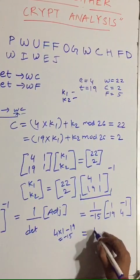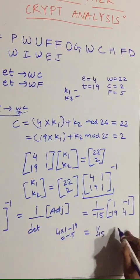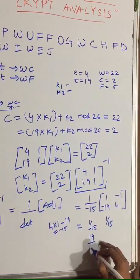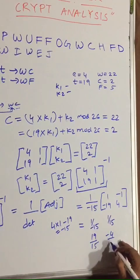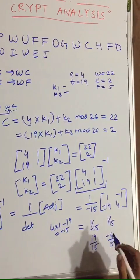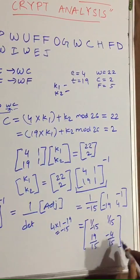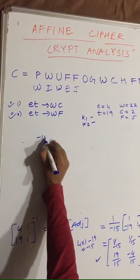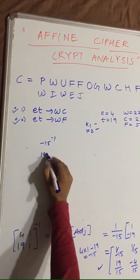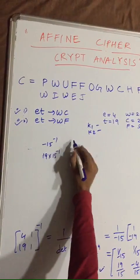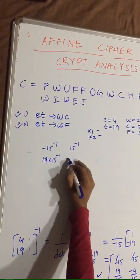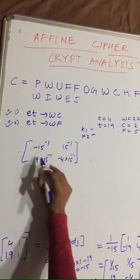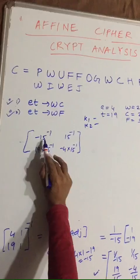Multiplying by 1/−15, the inverse matrix becomes [1/(−15), 19/15; 1/15, −4/15], which simplifies to [−15⁻¹, 19·15⁻¹; 15⁻¹, −4·15⁻¹]. We need to find the multiplicative inverse of 15 in mod 26.